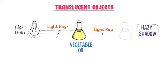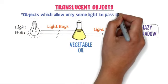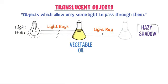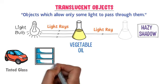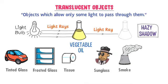Therefore, we define translucent objects as objects which allow only some light to pass through them. For example: tinted glass, frosted glass, tissue, sunglasses, smoke, wax paper, colored syrup, etc. These all objects are translucent objects and they form a hazy shadow if light falls on them.